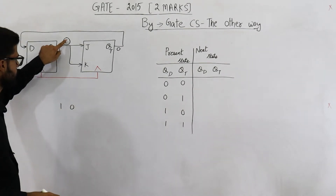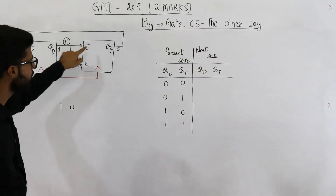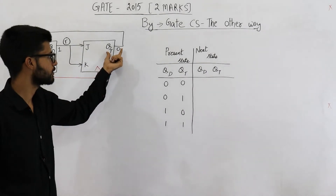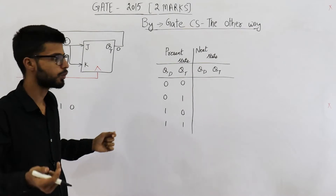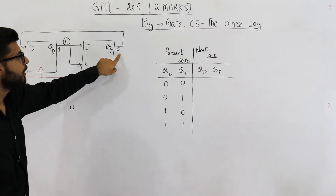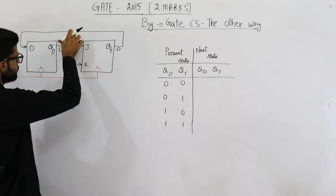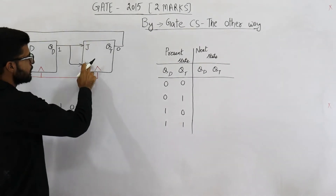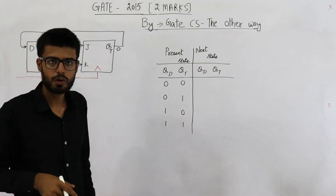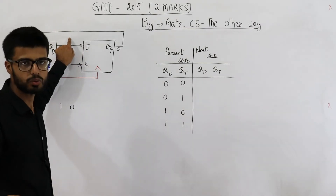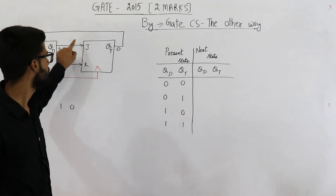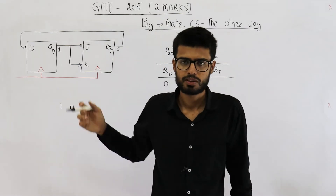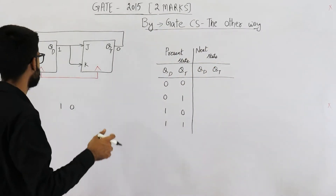If T input is 1, the T flip-flop will toggle its output. So if the output is 0, upon giving a clock it will become 1. If T is equal to 0, it will not toggle. When J=K=1 that is toggle mode, that means T is 1. When both are 0, that means T=0, which is the state holding mode. So it's just the normal behavior of a JK flip-flop — nothing new.